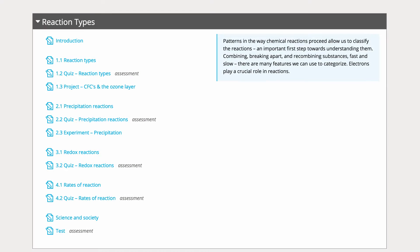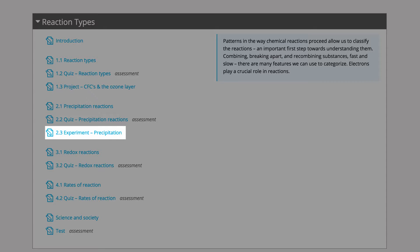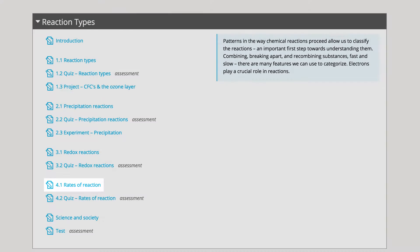The unit has four lessons. In the first, we cover composition, decomposition and displacement reactions. Lesson two is precipitation reactions with an experiment. Lesson three, redox. And lesson four, rates of reaction.